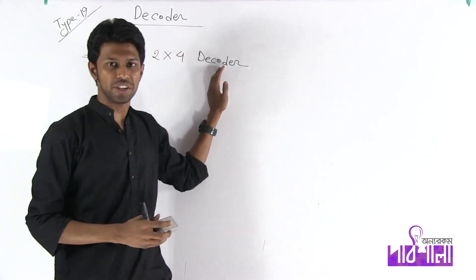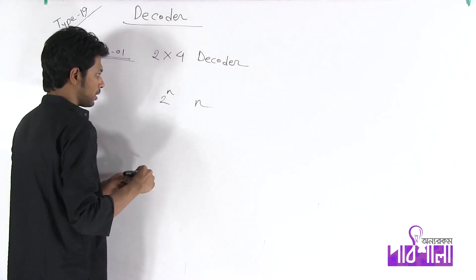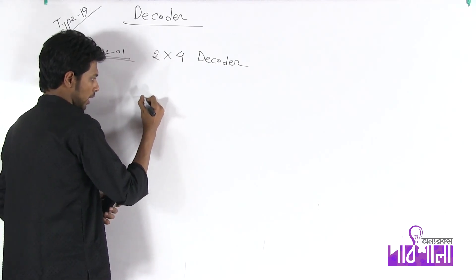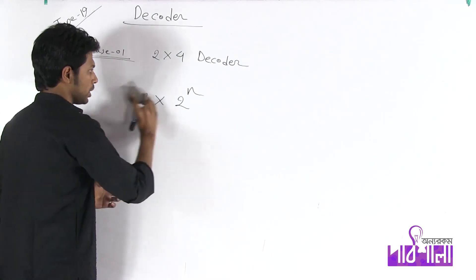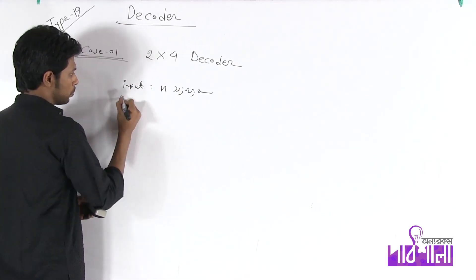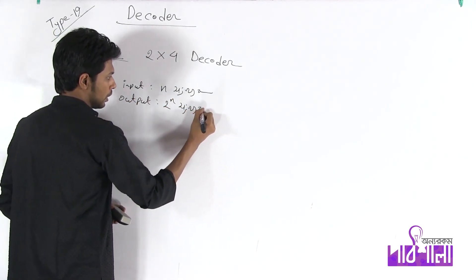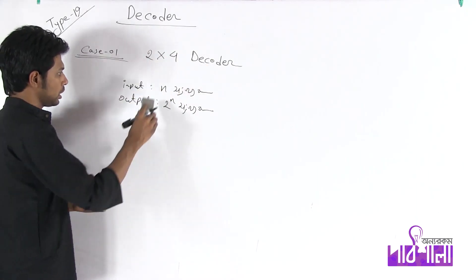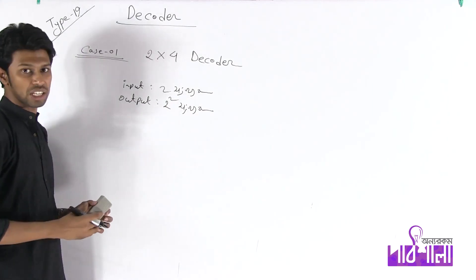The encoder is established by the input to the power N, and the output to N. But the decoder has the same input to the power N. So the 2-into-4 decoder has input 2 and output 2 to the power of 2, which means 4.